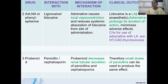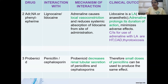Probenecid inhibits the tubular secretion of penicillin, so levels of penicillin increase in the body. Therefore, a smaller dose of penicillin can be used to produce the same effect. Probenecid decreases renal tubular secretion, thereby increasing the levels of penicillin — a beta-lactam antibiotic effective against gram-positive bacteria.